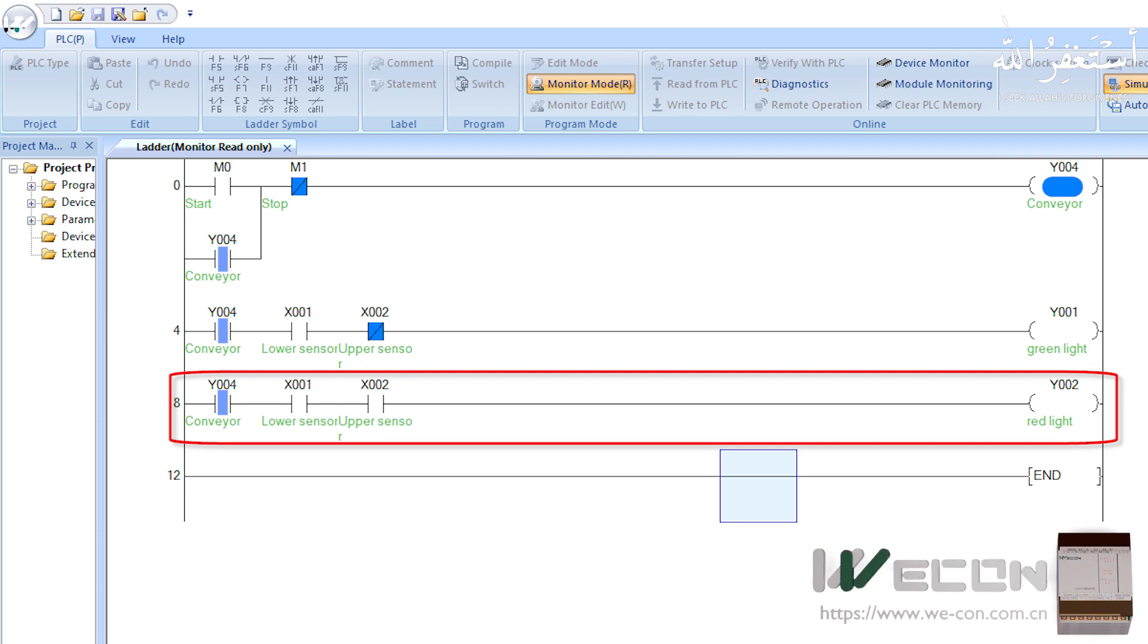In the third rung, we made logic to detect large boxes with more height. We take normal open contacts of both sensors X1 and X2 and put them in series with each other. When a large box comes in front of these sensors, both contacts close and it will turn on the output Y2. Y2 is a red light to indicate the detection of the large box.